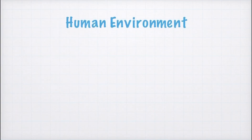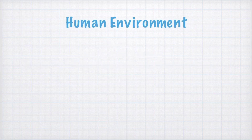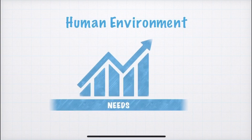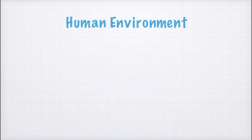Now, coming to the last topic of our chapter, we will study human environment. In earlier days, human needs were less, so they adapted themselves according to the environment. But as time went on, humans felt the need to grow and develop, and their needs started increasing. For example, many years back, not a lot of houses had air conditioners, but now they are common. Thousands of years back, there were no vehicles, so man used to walk or use animals for transportation.